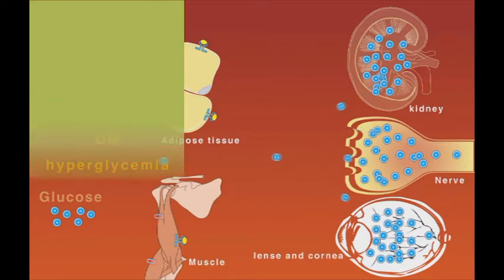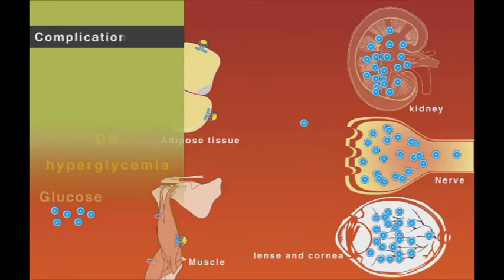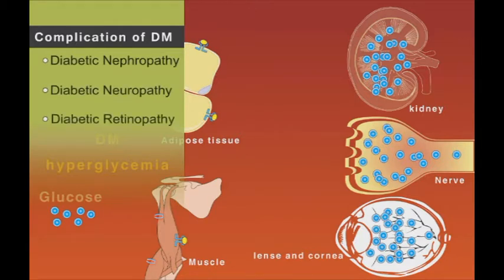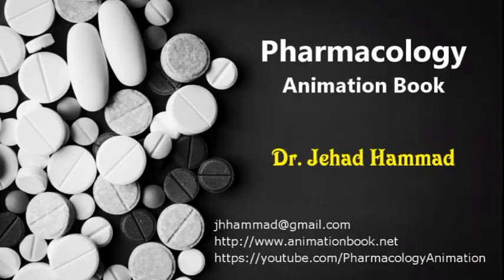The uncontrolled uptake of glucose constitutes the base for chronic complications of diabetes mellitus, such as diabetic nephropathy, diabetic neuropathy, and diabetic retinopathy.